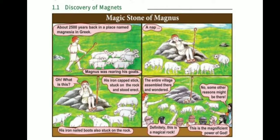Next topic: Discovery of Magnets. Look at the picture — magic stone of Magnus. About 2,500 years back, in a place named Magnesia in Greece, a man named Magnus was rearing his goats.